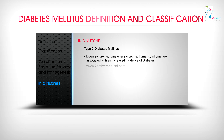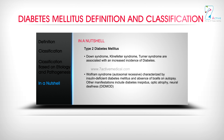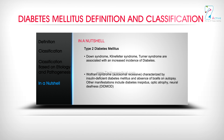Down syndrome, Klinefelter syndrome, and Turner syndrome are associated with an increased incidence of diabetes. Wolfram syndrome is an autosomal recessive condition characterized by insulin-deficient diabetes mellitus and absence of beta cells on autopsy. Other manifestations include diabetes insipidus, optic atrophy, and neural deafness — collectively known as DIDMOAD.